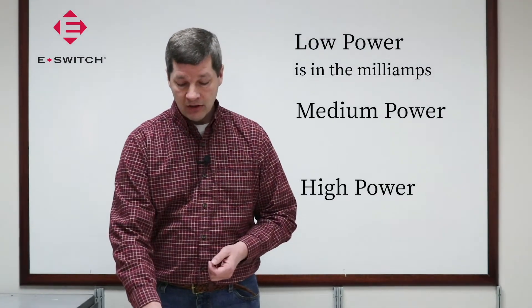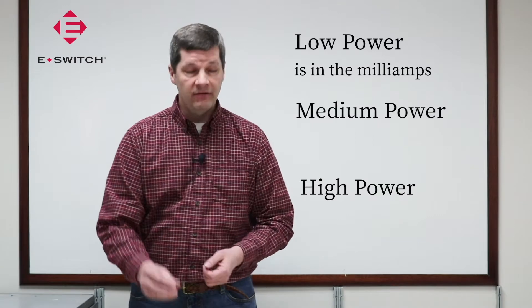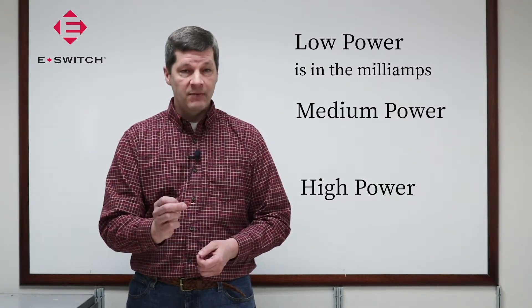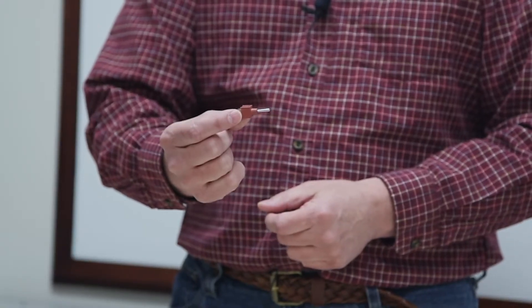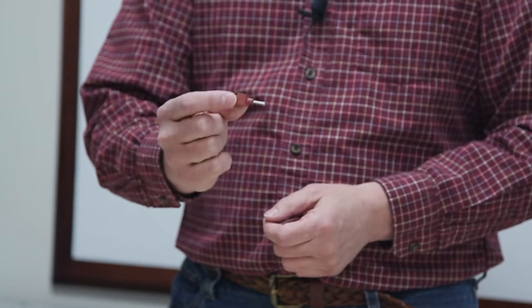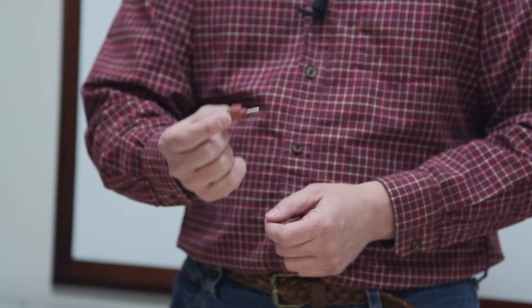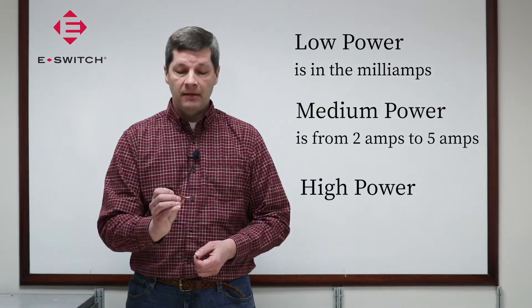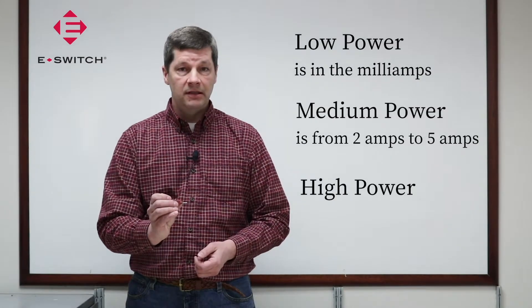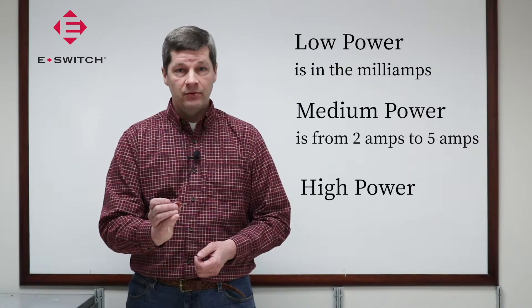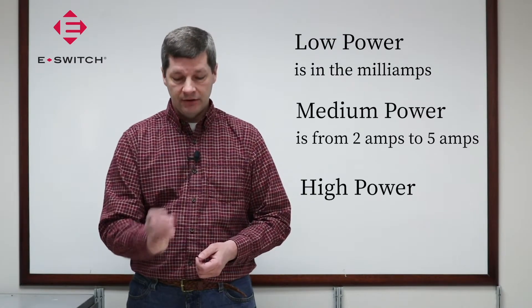When we talk about medium power devices, we're also talking about board-level products that are a little bit bigger, or panel mount products. These are often 2 to 5 amps up to 30 volts DC, and these can also be used with AC voltages.